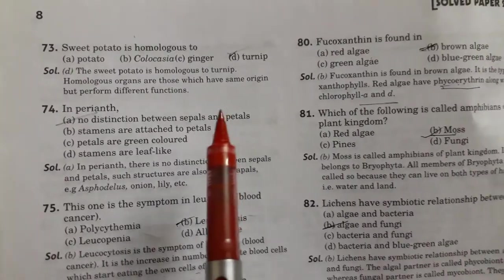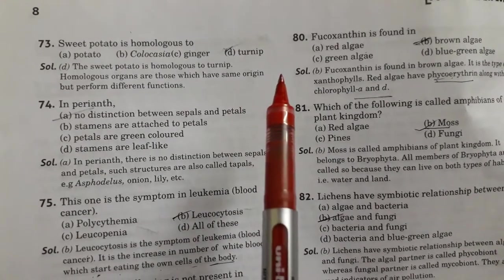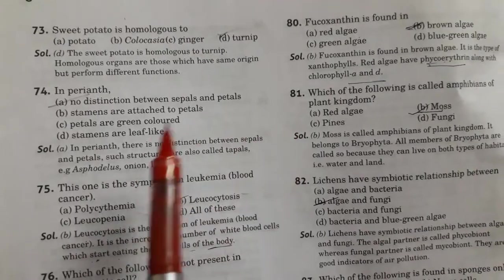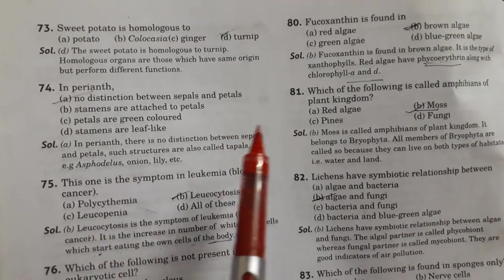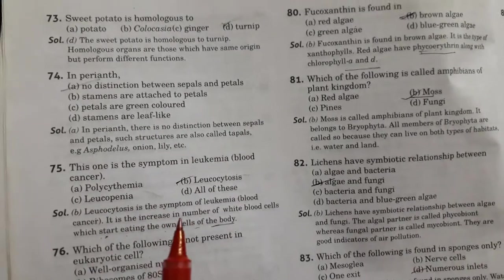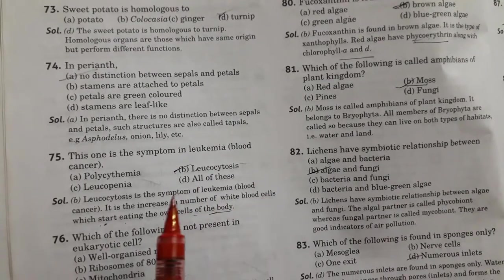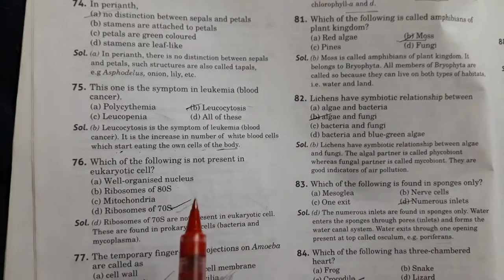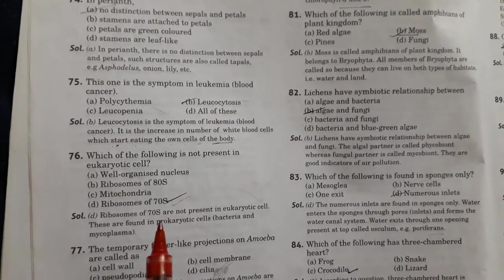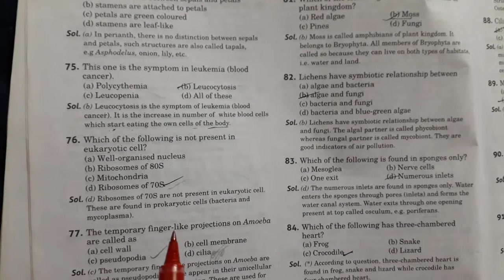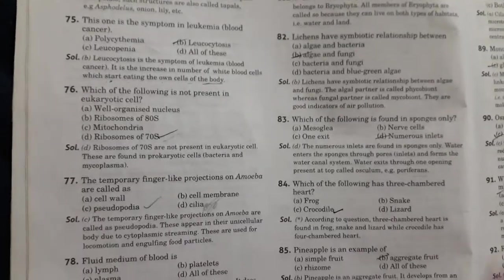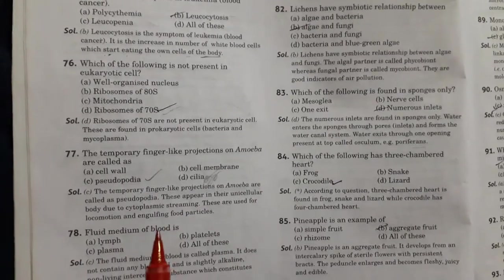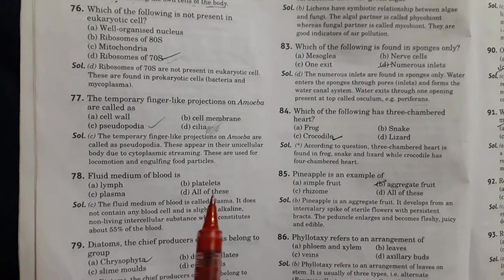Next, sweet potato is homologous to turnip. Next, in perianth no distinction between sepals and petals. Option A is right. Then this one is the symptom in leukemia, so this is blood cancer, leukocytosis. Next is which of the following is not present in eukaryotic cells. So ribosome of 70S is not present in eukaryotic cells. Next is the temporary finger-like projections on amoeba are pseudopodia.